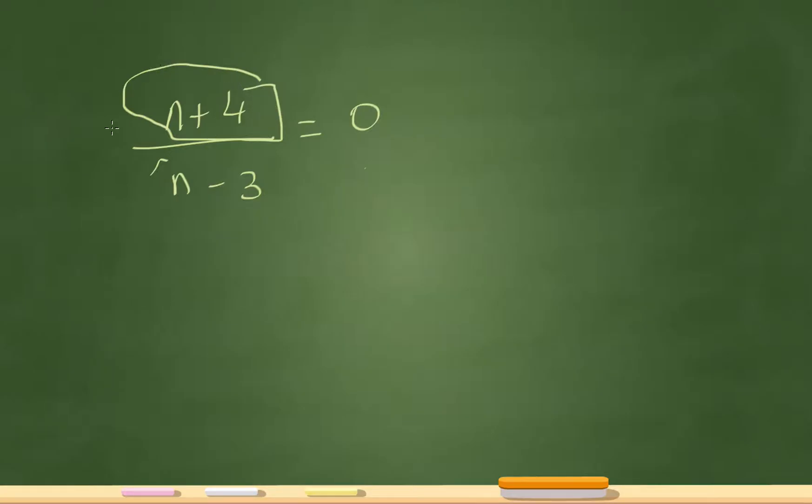So what can I make n so my numerator becomes 0? Remember I'm doing n plus 4, and if you think about that then n must be negative 4, because negative 4 plus 4 is 0, and 0 divided by any number is going to give me 0.